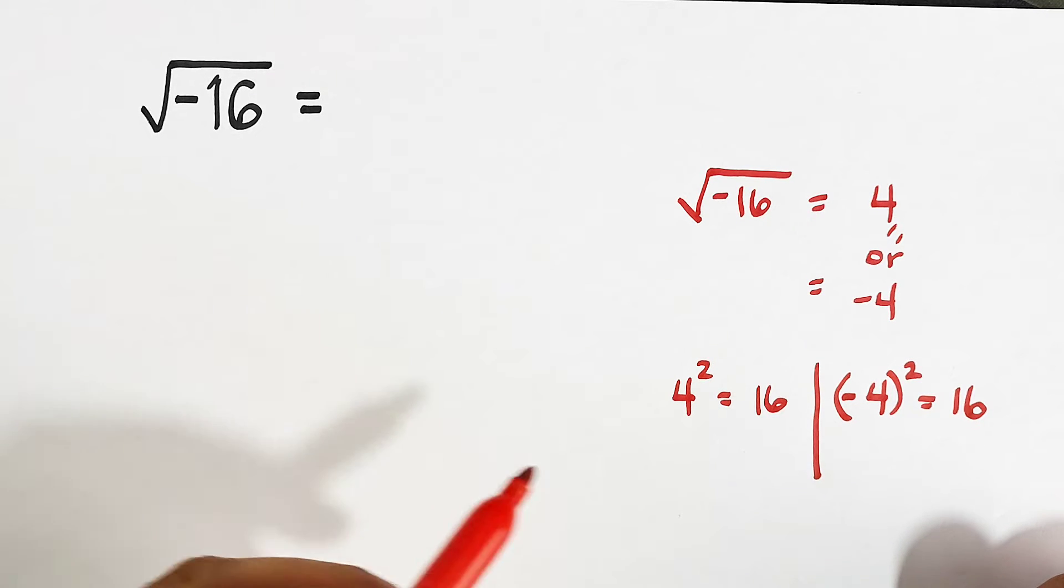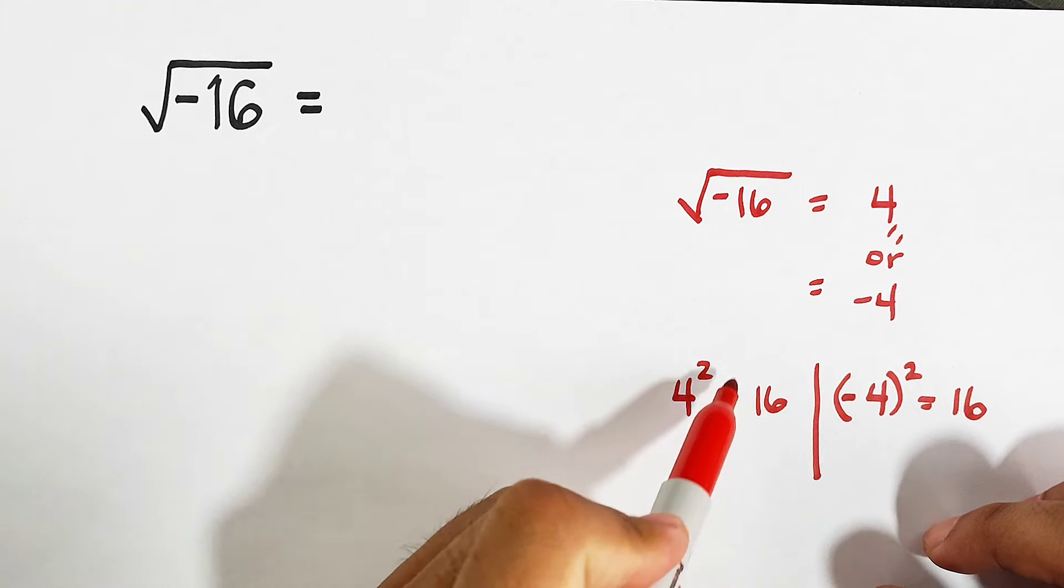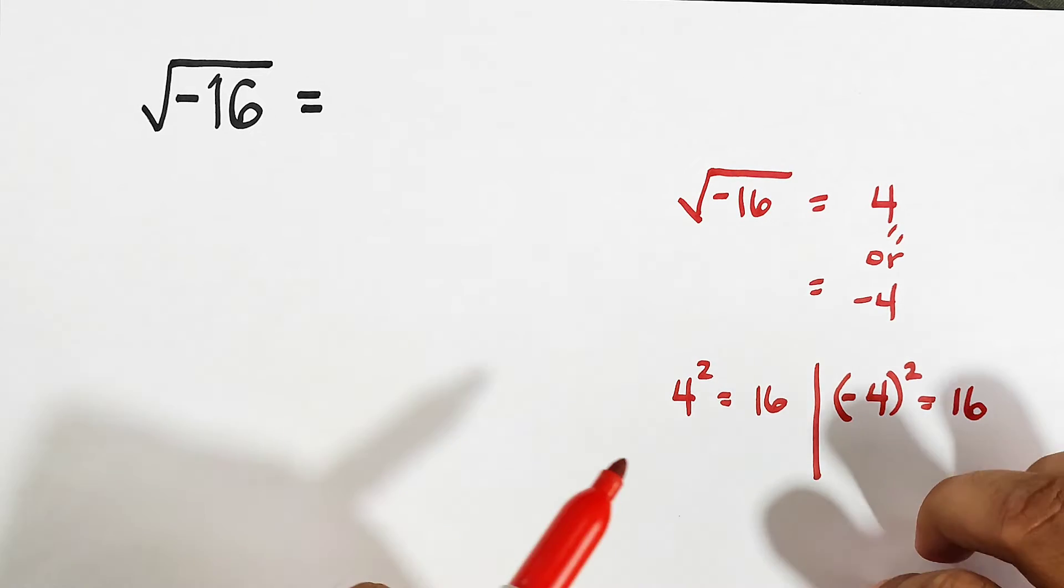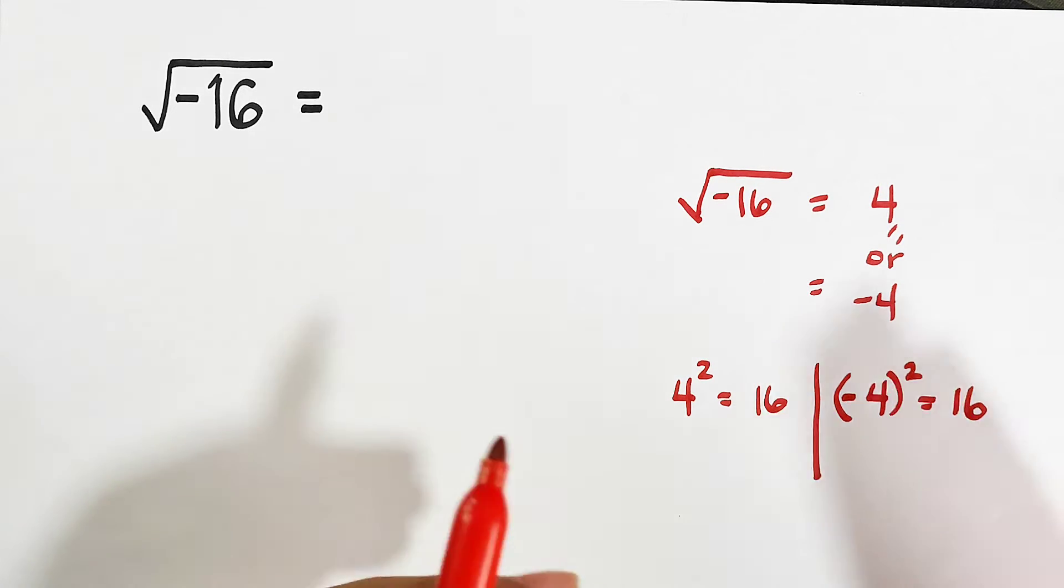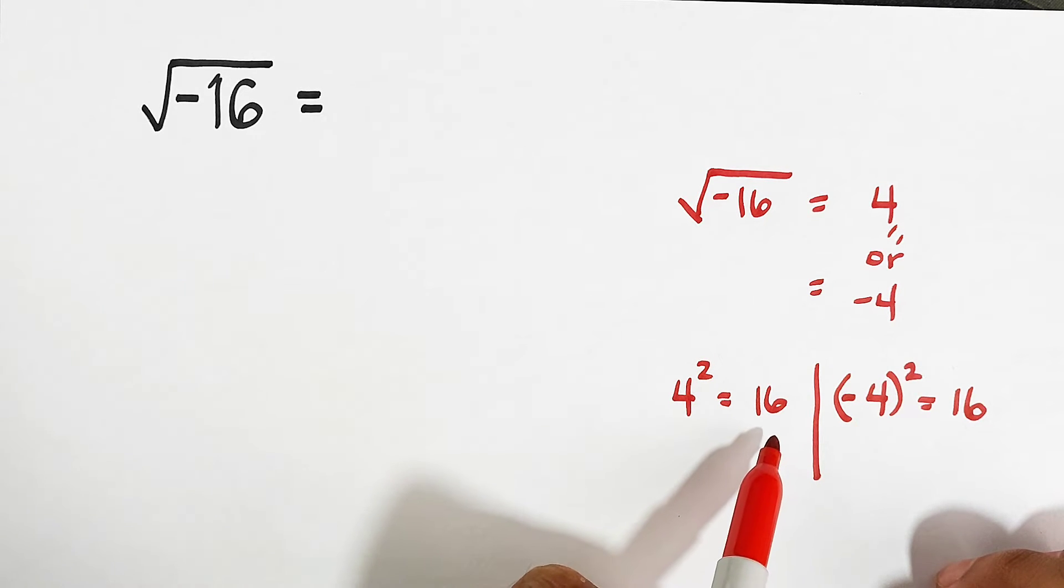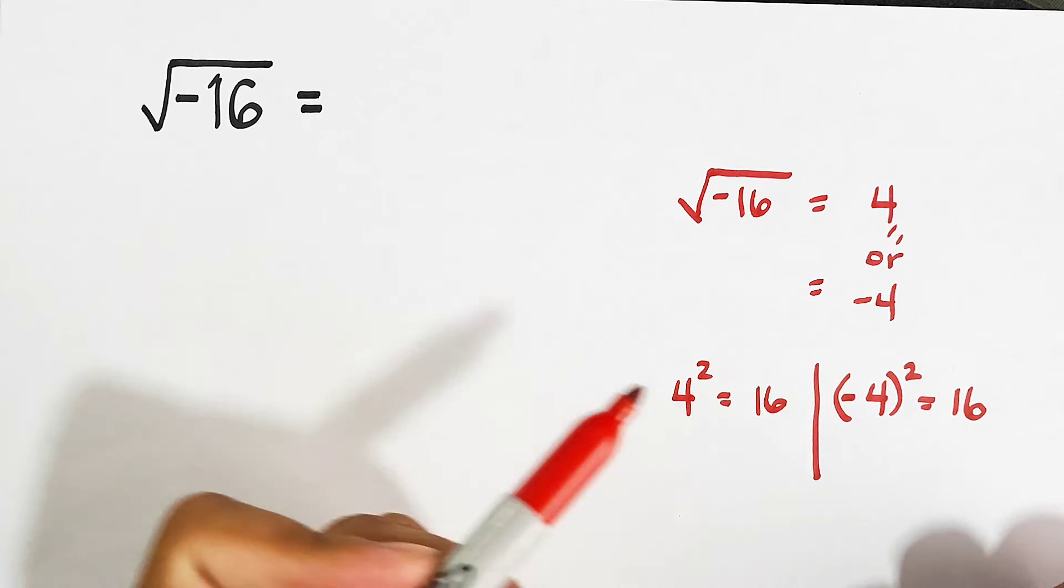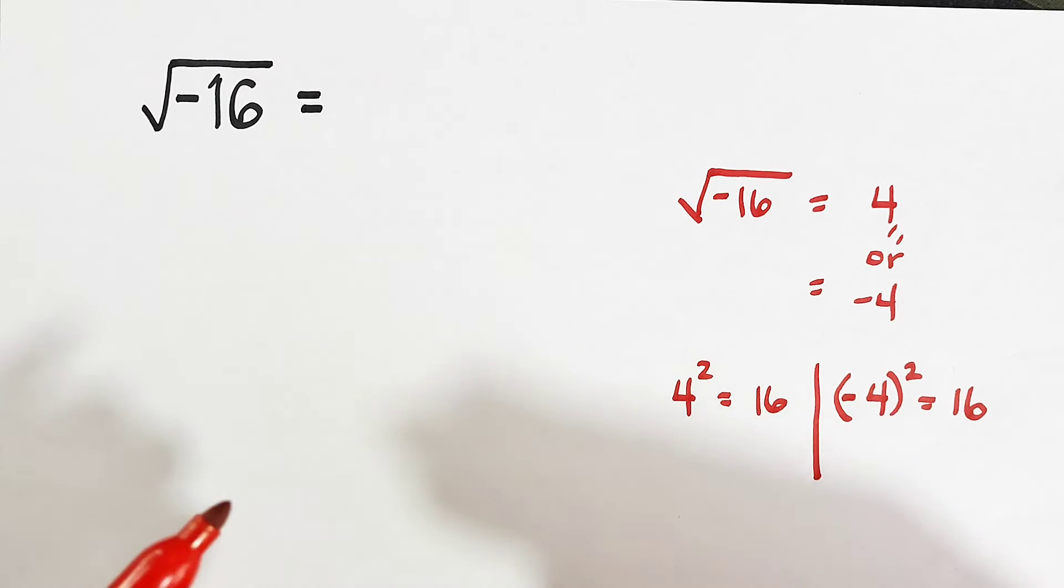So why do we need to square this number? Because in my point of view, squaring a number is the opposite of getting the square root of a number. So as you can see, 4 raised to 2 is equal to positive 16, and negative 4 raised to 2 is also positive 16. So we didn't get negative 16.